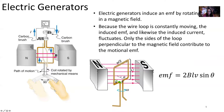So only these segments of our wire contribute. We've got two segments here that are contributing to this motional EMF. So the total EMF generated by this generator is two times the magnetic field times this length times its speed times sine theta. Our angle theta is the angle between our velocity vector and the magnetic field vector.